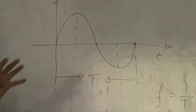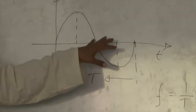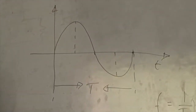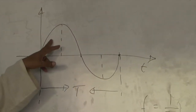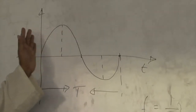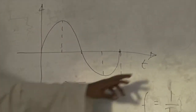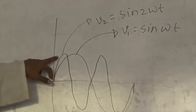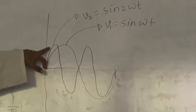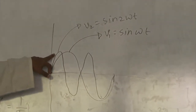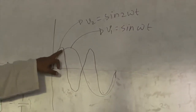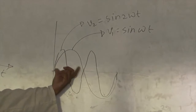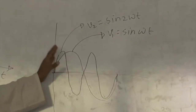The audio signal generator generates a signal which we can observe on the oscilloscope. When we know the audio signal generator and change the frequency here, what happens? Here, where we had omega t, now it is 2 omega t, meaning double the frequency. In the half cycle, 2 omega t completes two full cycles.